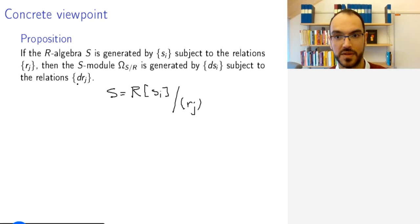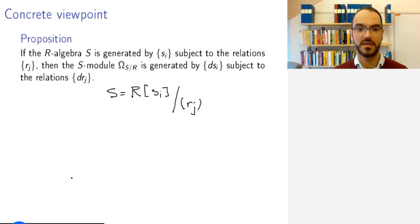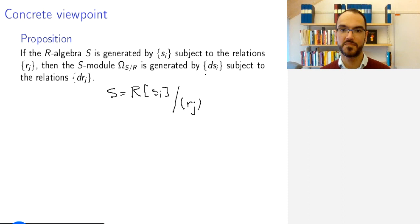There are a few things that one needs to see. The first thing is that this means it's enough to look at a set of generators, and this is because of the additivity and the Leibniz property. If we know what ds_i is, then we know what d(s_i·s_j) is. If we know this for all i, then we know this for all elements in S.